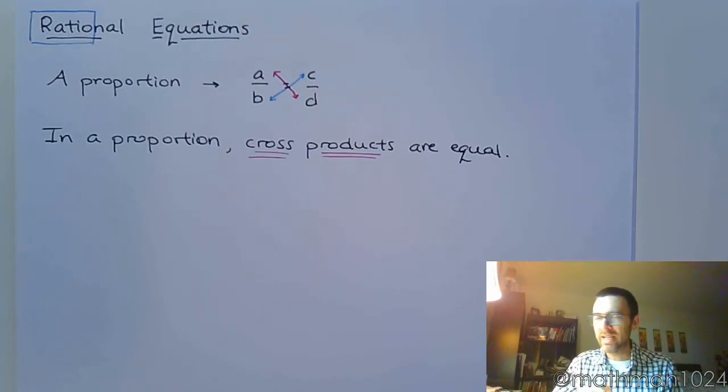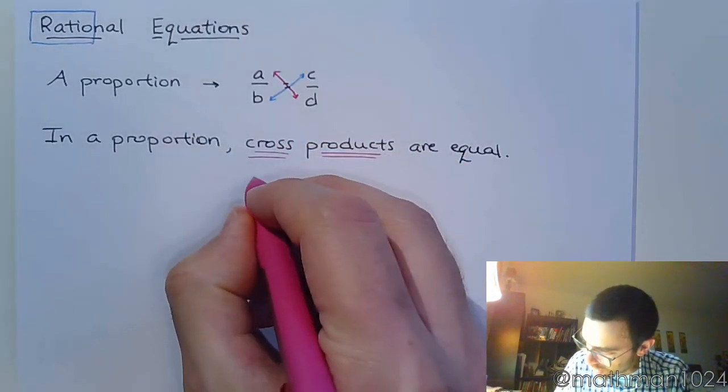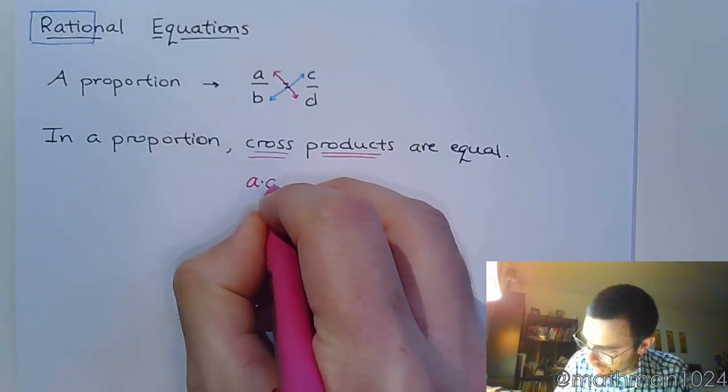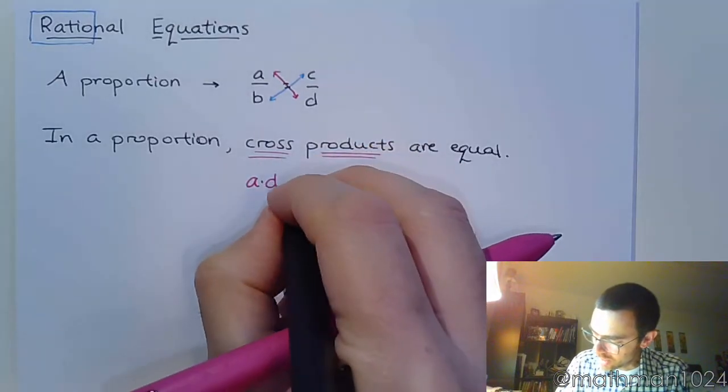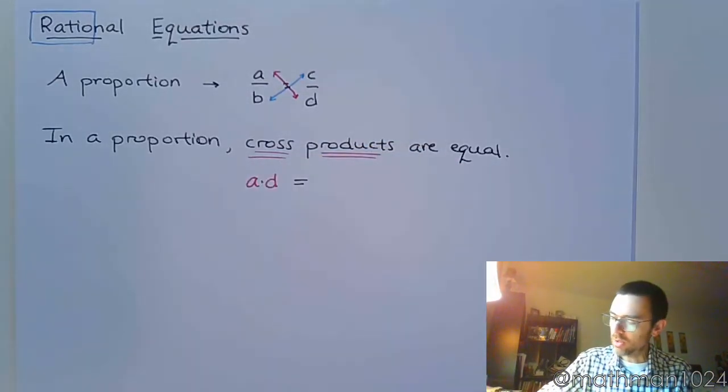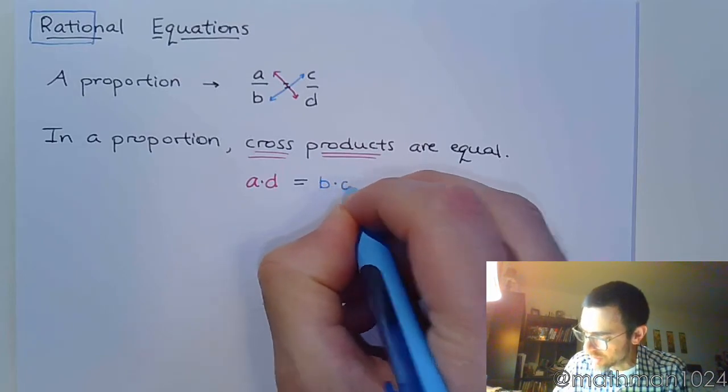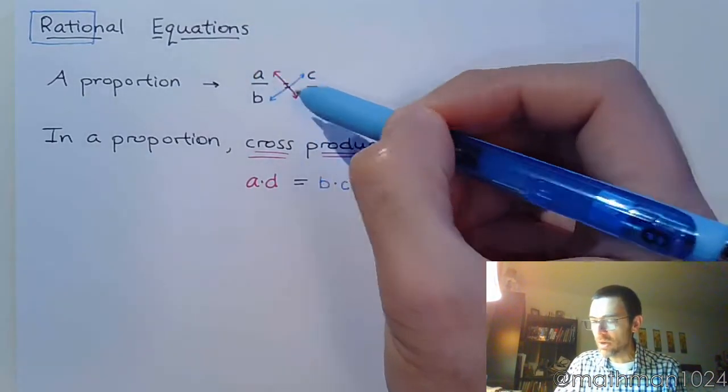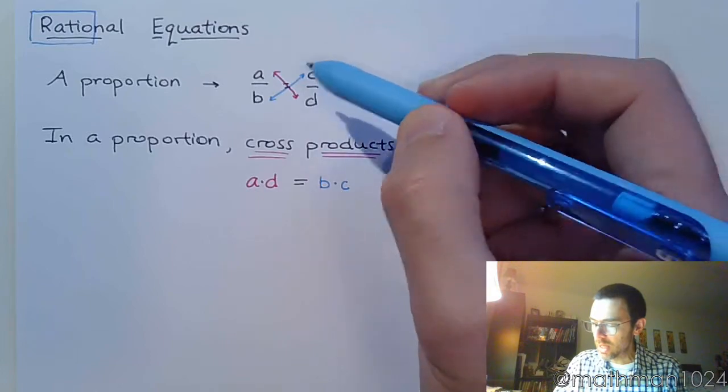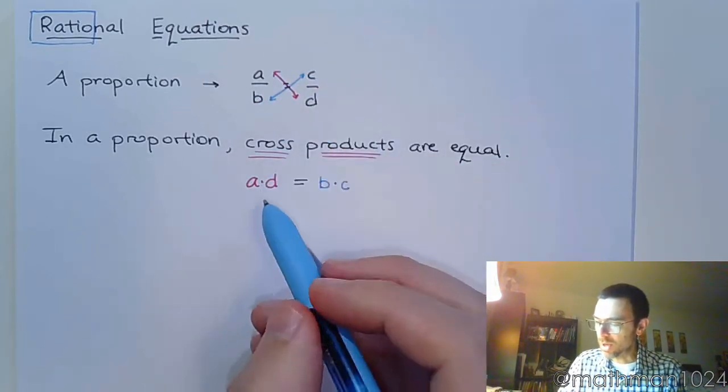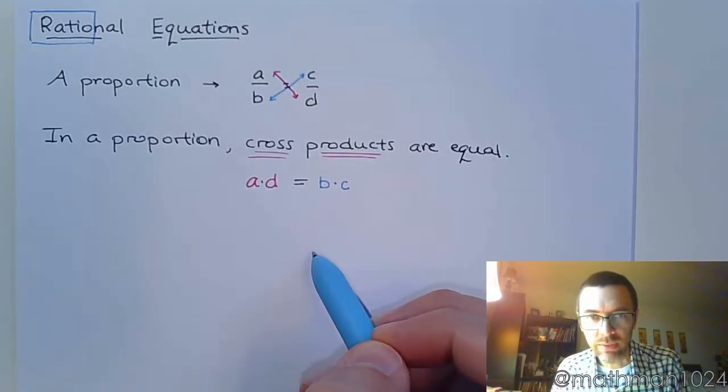Please don't say cross multiply. I just don't like that. It's just kind of nasty. So, in a proportion, cross products are equal. That means that the product that I did here in pink, that's going to be A times D. This guy is equal to the other cross product of B times C. Now, A and D are called the extremes. B and C are called the means. So, the product of the extremes is equal to the product of the means.